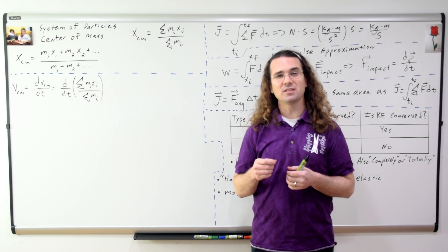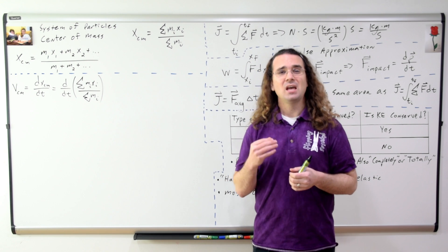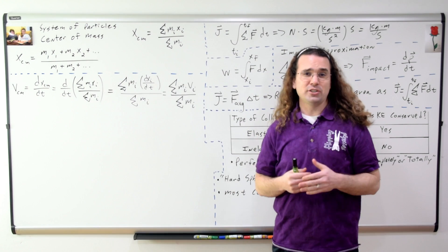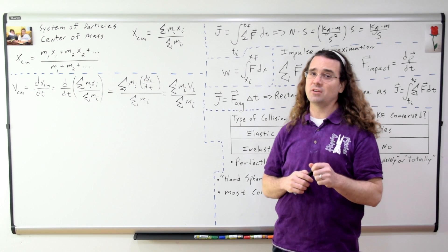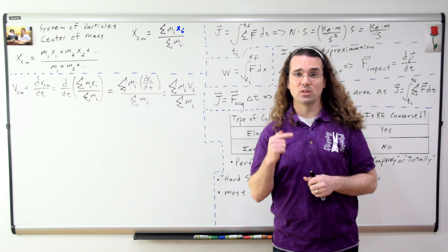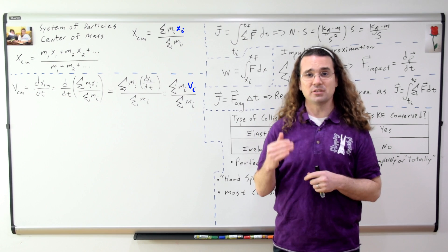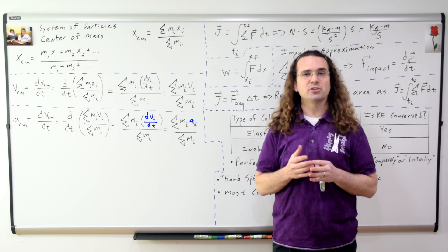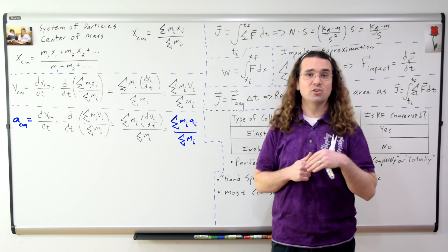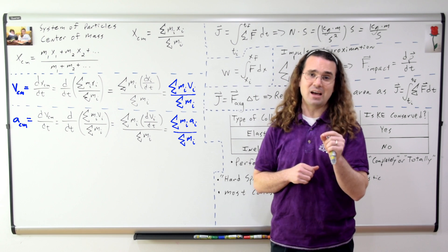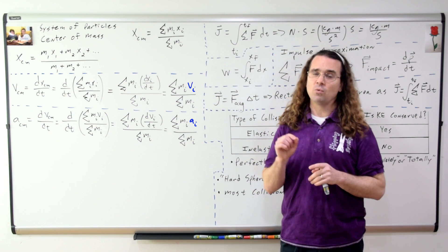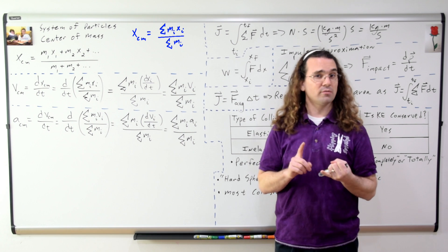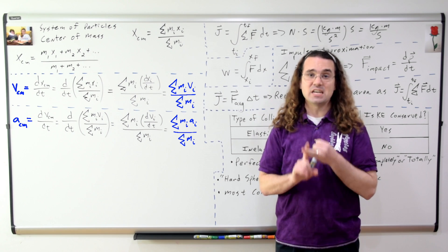The velocity of the center of mass of a system of particles equals the derivative of the position of the center of mass with respect to time. Because the total mass does not change and the derivative of position with respect to time is velocity, the velocity equation is almost identical to the position equation — you simply replace position with velocity. Similarly, the acceleration of the center of mass equation replaces velocity with acceleration. Note: only the position equation is on the AP equation sheet; the velocity and acceleration forms are not.